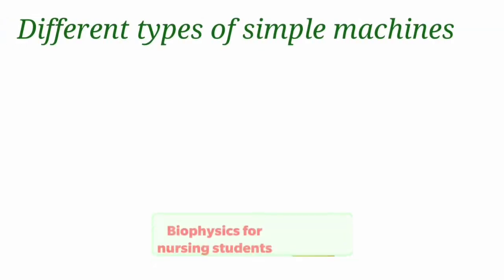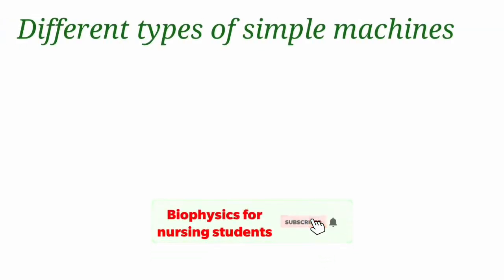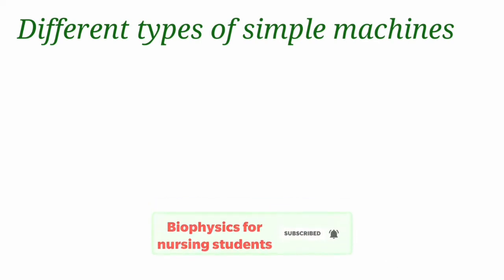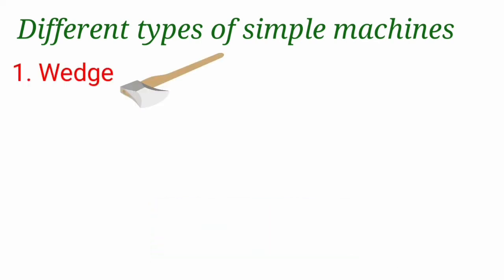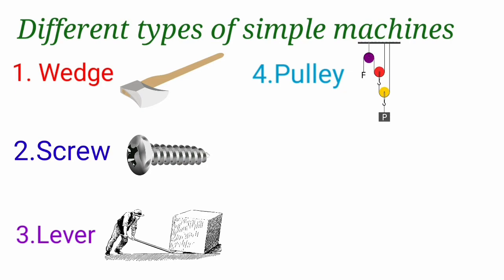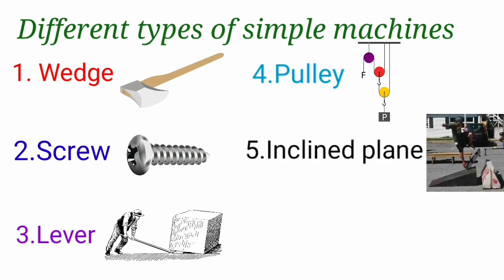Coming to different types of simple machines, there are six simple machines present: the wedge, screw, lever, pulley, inclined plane, and axle.